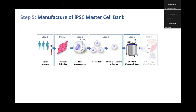The last piece to discuss is the master cell bank. You've got your fibroblasts, consent, documentation, tracing procedures, RNA reprogramming done, freedom to operate confirmed, and a polyclonal pool. You decide whether to take the polyclonal pool or a single clone to make a master cell bank. Making the master cell bank should be done in a GMP suite, since this will be a standard starting material for multiple manufacturing processes. Entry into a GMP suite should definitely occur by this stage.